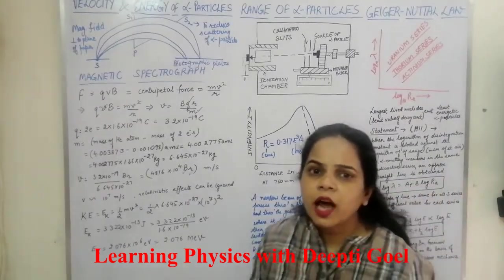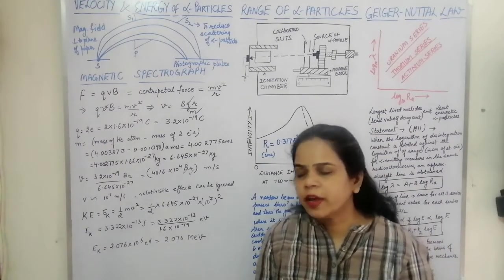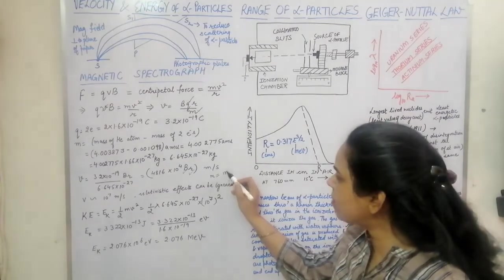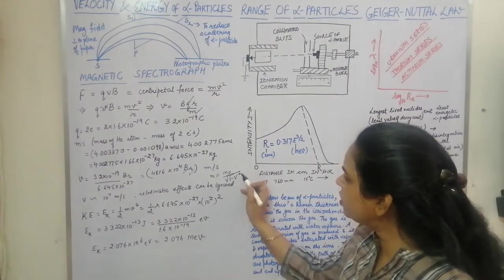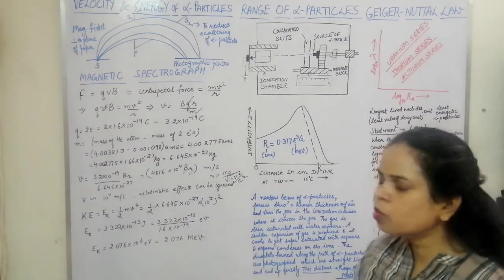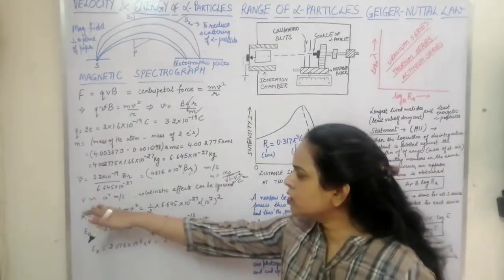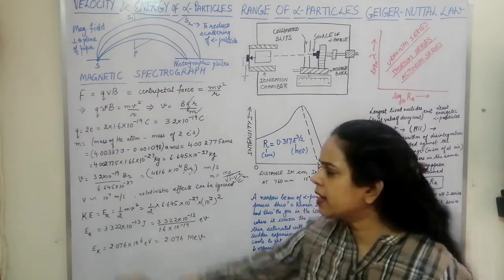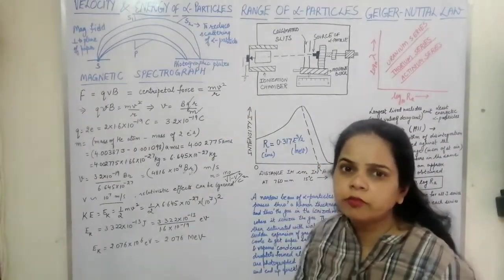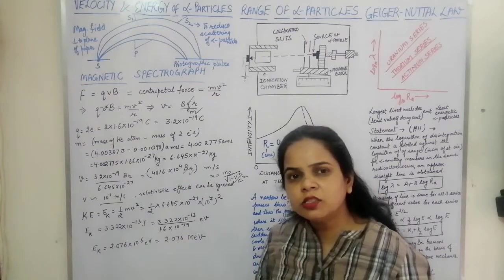The velocity is quite high, but since it is much less than the speed of light, we can neglect relativistic effects. If relativistic effects had to be considered, the mass would be M = M₀ / √(1 − v²/c²). Since the velocity is not relativistic, we use the classical formula. Since the alpha particle is moving, it possesses kinetic energy by virtue of its motion.